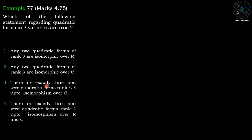Option 3: There are exactly three non-zero quadratic forms of rank ≤ 3 up to isomorphism over C. Option 4: There are exactly three non-zero quadratic forms of rank 2 up to isomorphism over R and C.